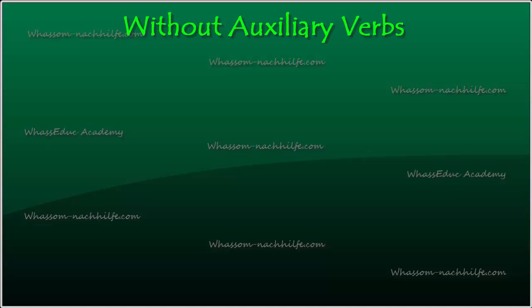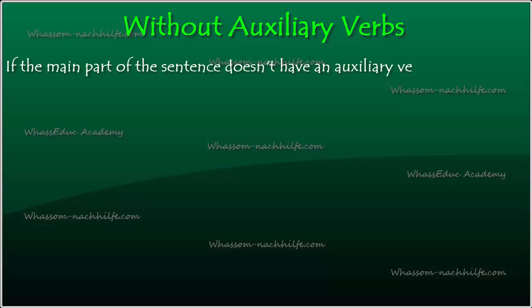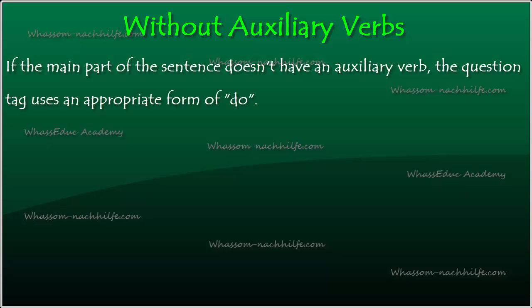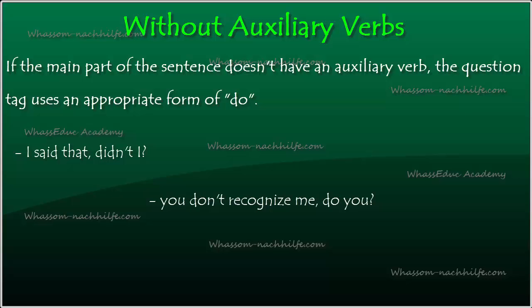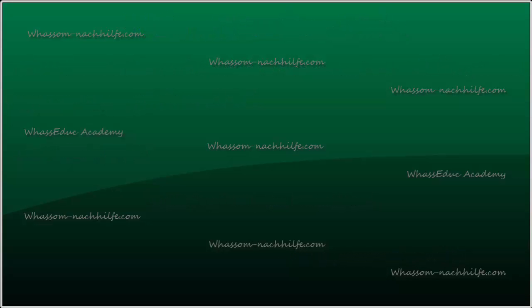In the third part, we have question tags without auxiliary verbs. If the main part of the sentence doesn't have an auxiliary verb, the question tag uses an appropriate form of 'do'. For example: 'I said that, didn't I?', 'You don't recognize me, do you?', and 'She eats meat, doesn't she?'